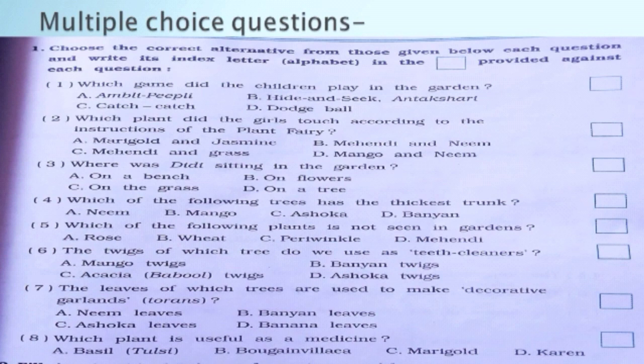Second question is: which plant did the girls touch according to the instructions of the plant fairy? Options are: marigold and jasmine, mehendi and neem, mehendi and grass, mango and neem.